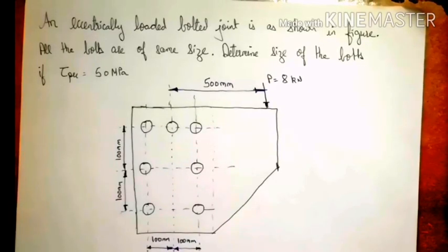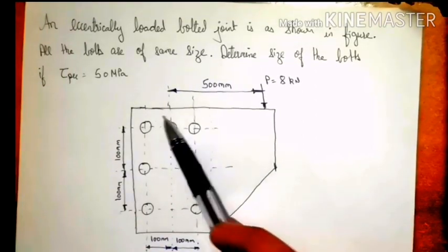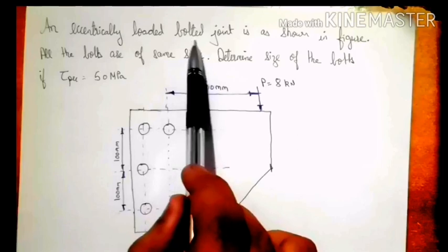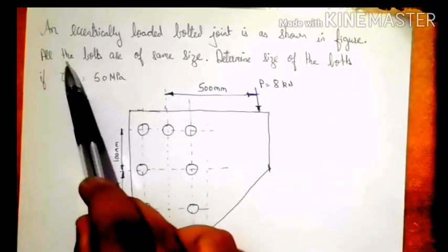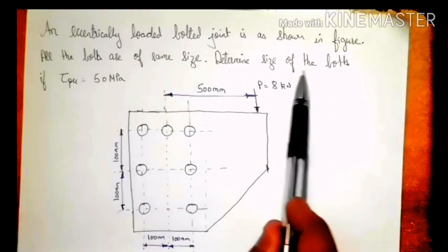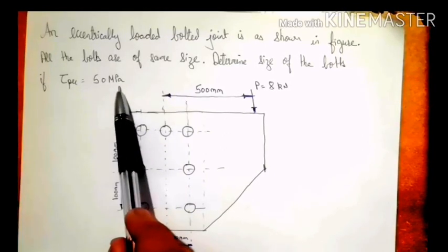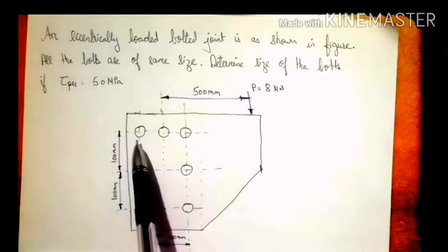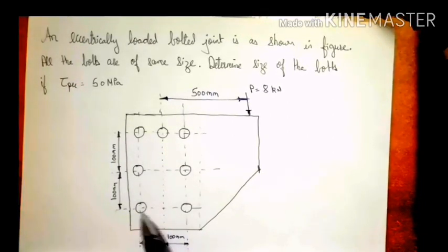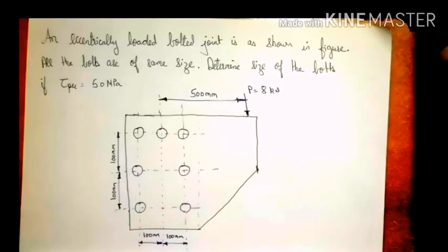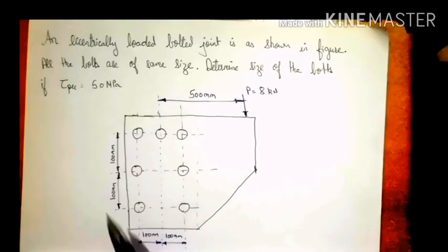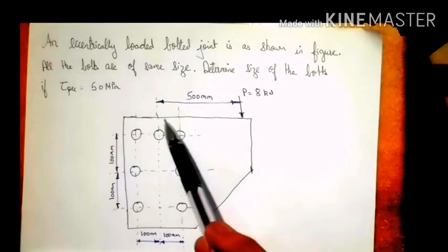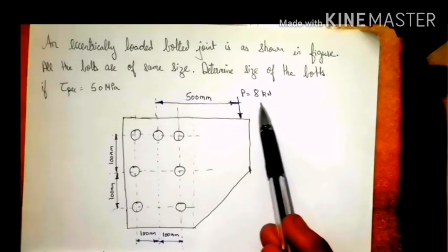Let us begin with Type 1 problems wherein the load applied is in the plane of the bolting system. The first problem says: an eccentrically loaded bolted joint is as shown in the figure. All the bolts are of same size. Determine the size of the bolts if the permissible shear stress is 50 MPa. There are seven bolts — three on the first line, then bolts four through seven. The vertical and horizontal distance between each bolt is 100 mm, the load is located 500 mm from the centre line of the bolts, and the applied load is 8 kN.